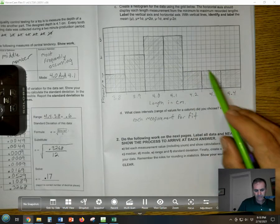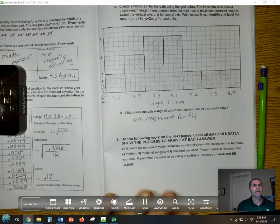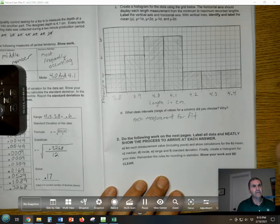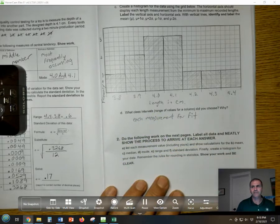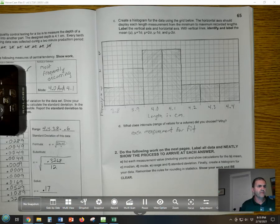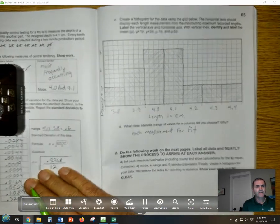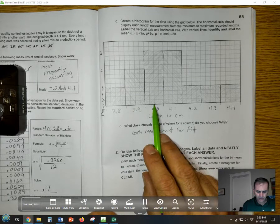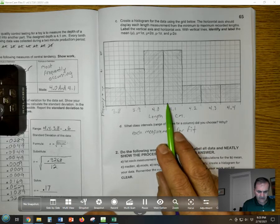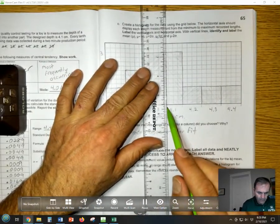Now we're going to identify and label the mean, the mean plus one standard deviation, the mean plus two standard deviations, and then the mean minus one and minus two. We'll start with the mean. The mean was 4.07, if we remember right. So if we consider the middle of this bar to be 4.0 and the middle of that bar to be 4.1, 4.07 is somewhere in the neighborhood of here. What I'd like you to do is we're going to draw a horizontal line right about there.